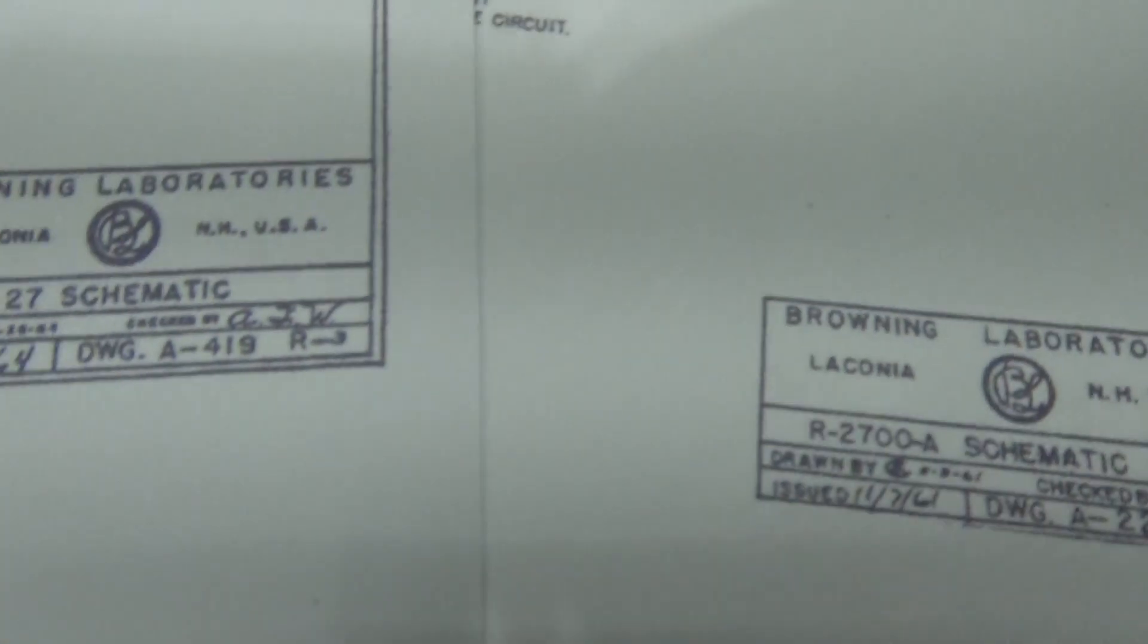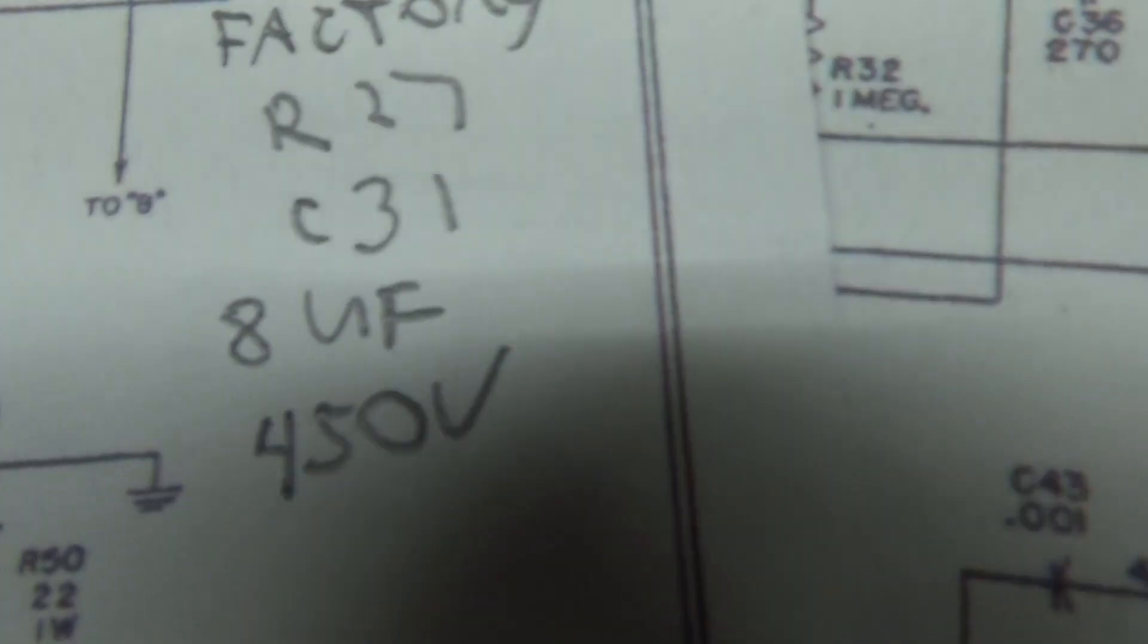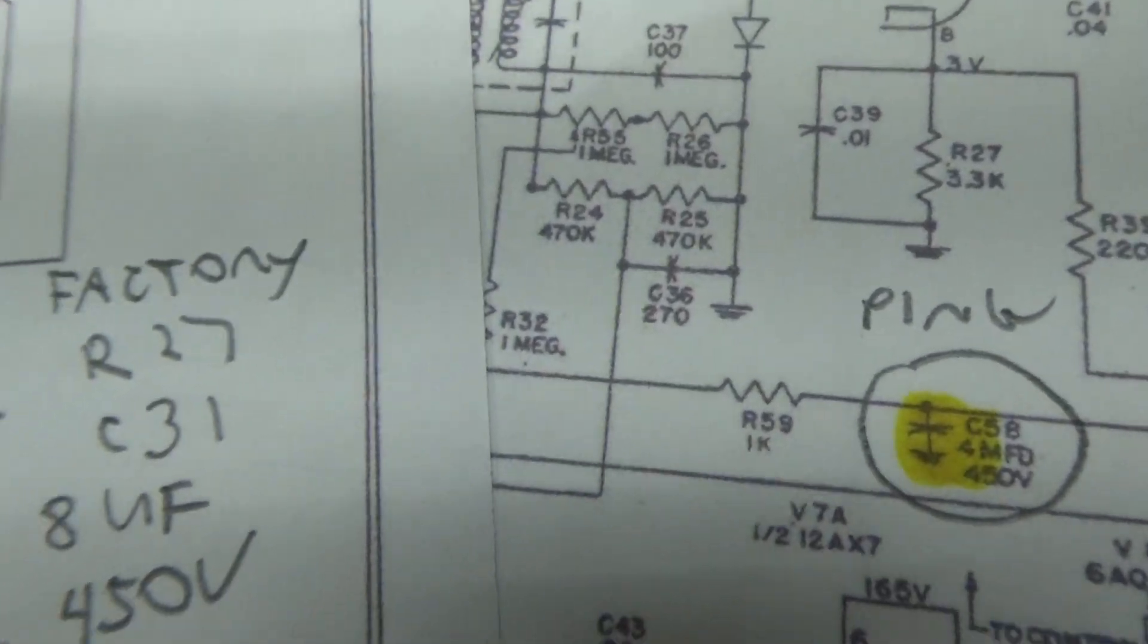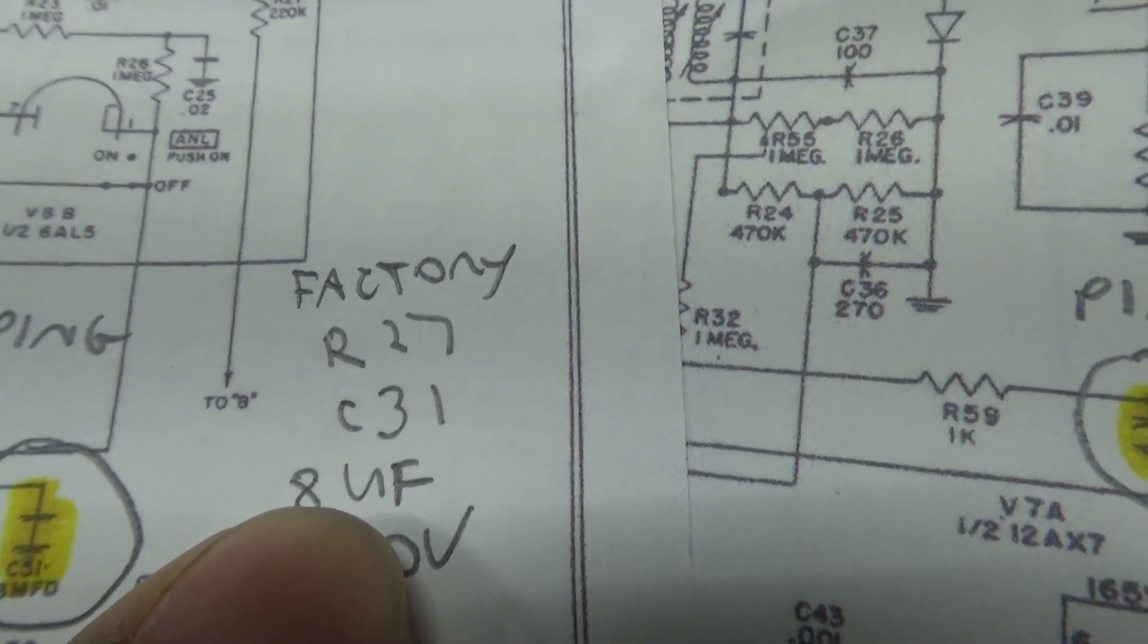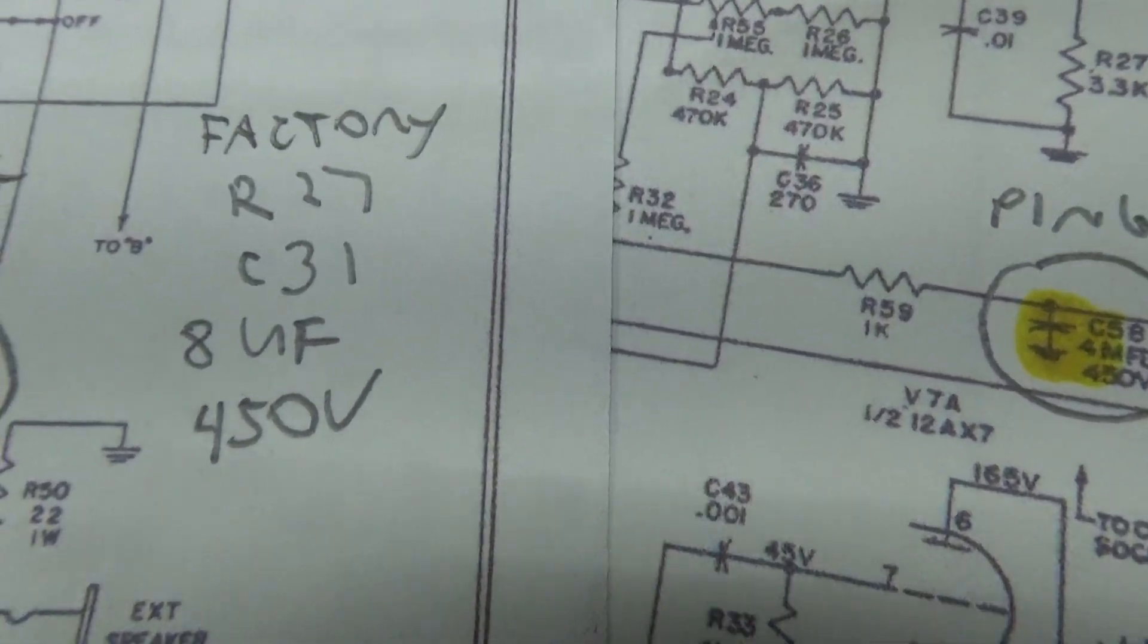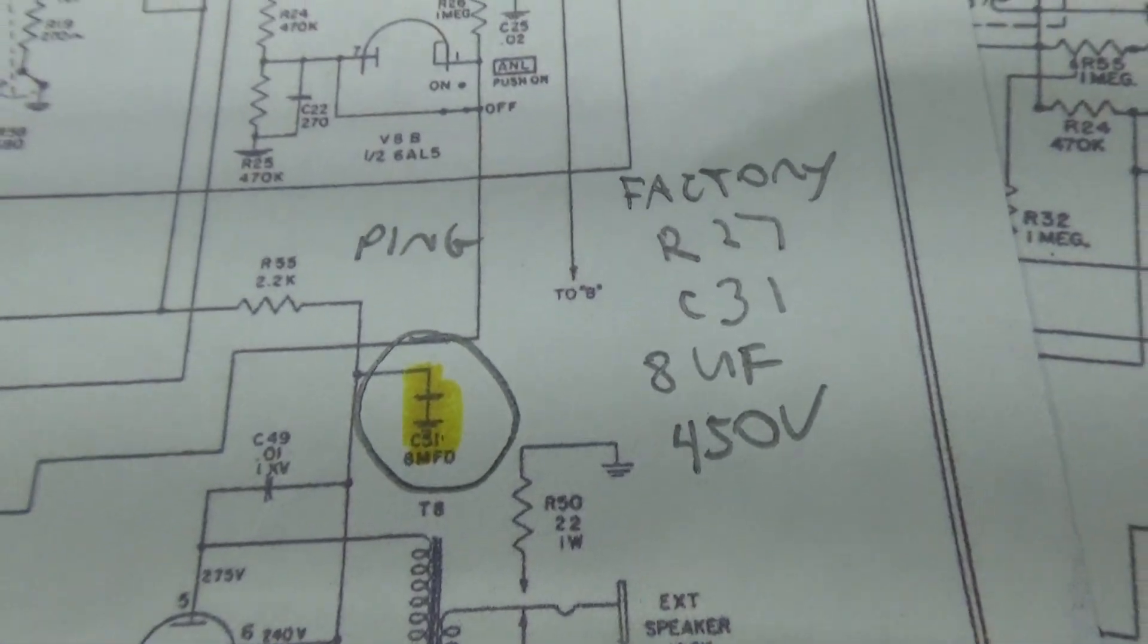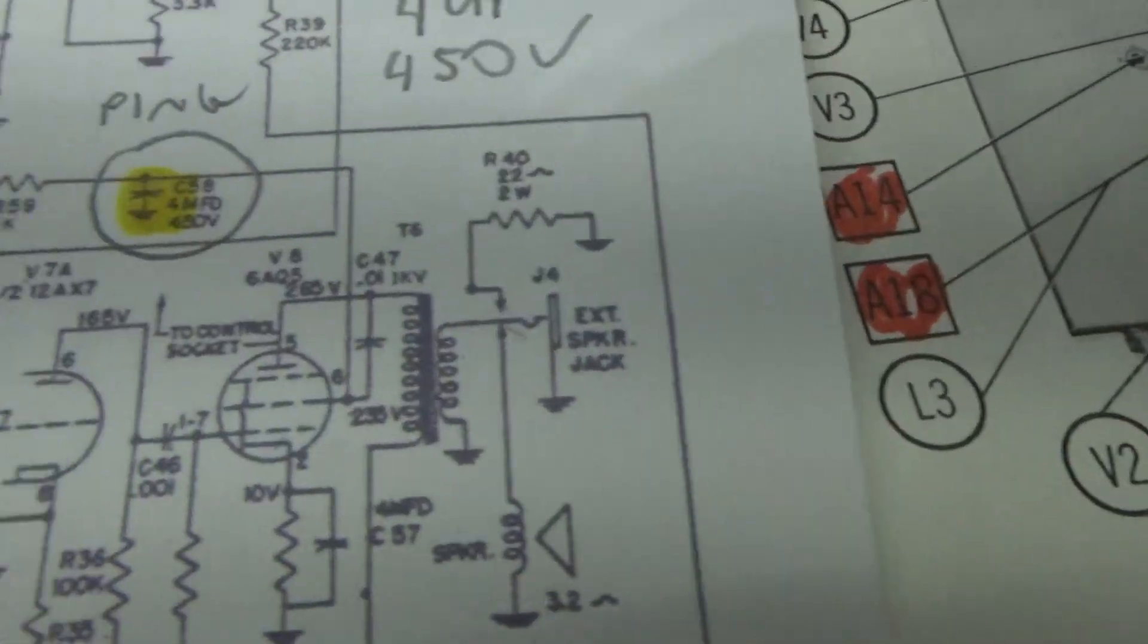For the Browning schematics, this one here is a R2700A, which is the same radio as we got in the Sam's here. But I got the pin cap circled in yellow there, and if you notice, even though it is the same radio, the Browning marks the pin cap on the same R2700A radio as C31. It originally comes with the 8 microfarad cap, which is going to give you a very short ping. If you want a decent ping, you got to go 20 microfarads or above, 450 volts.